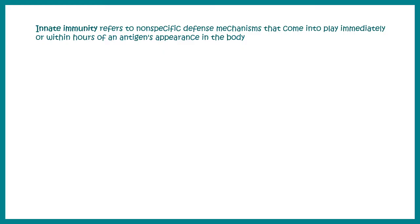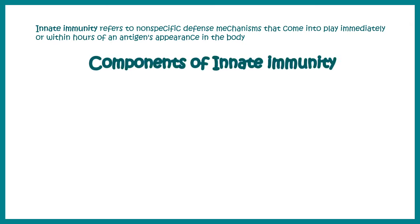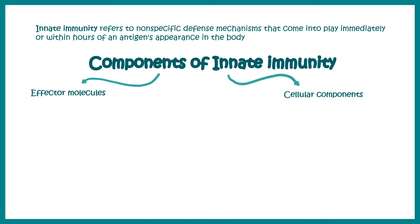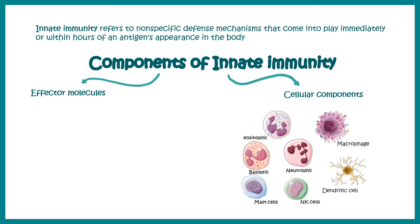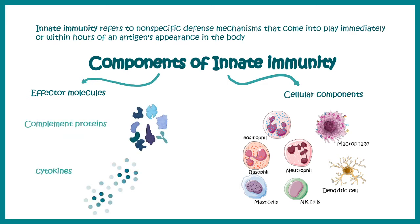In this video we'll talk about the innate immune system. Innate immunity refers to the non-specific defense response of our immune system that is evoked just after a few seconds after a pathogen has invaded our body. The components of the innate immune system involve effector molecules and cellular components. Inside the cellular components there are many cell types such as macrophages, dendritic cells, neutrophils, NK cells, mast cells, eosinophils, and many others. Inside the effector molecule category there are complement proteins and cytokines.